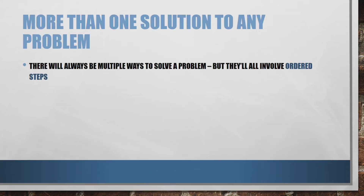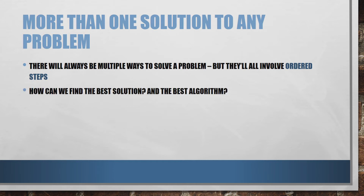We need to make sure we're aware that there will always be multiple ways to solve a problem, but whatever the solution is it's going to involve some kind of ordered steps. So if there's more than one way to solve any problem, how do we find out what the best solution is? What's going to be the best algorithm for solving our problem? There are two things we need to take into account when deciding what's going to be the best solution.